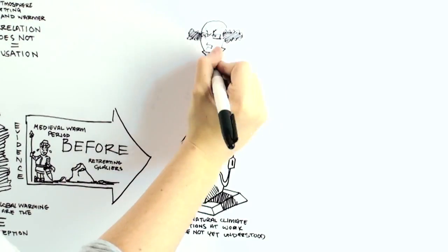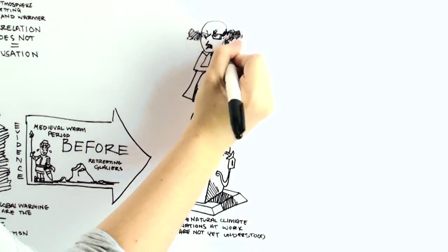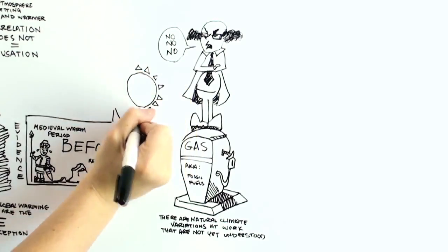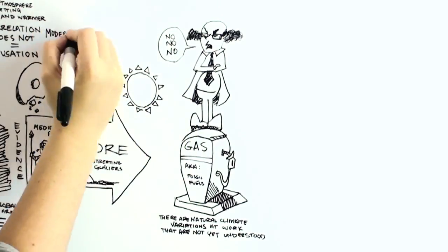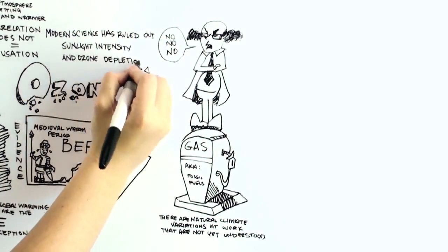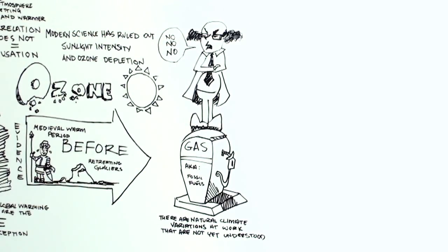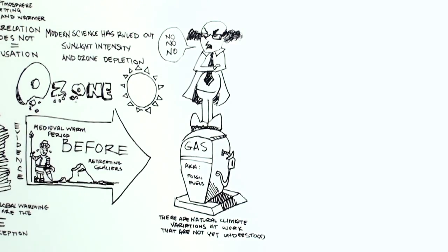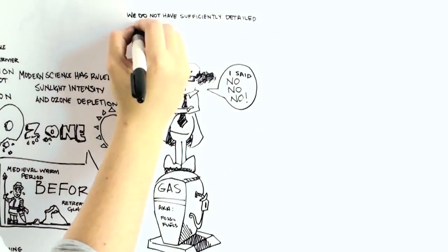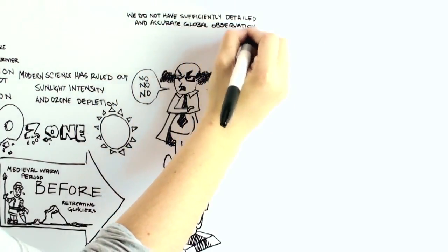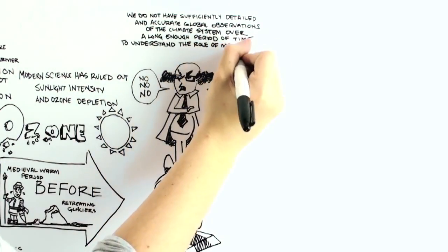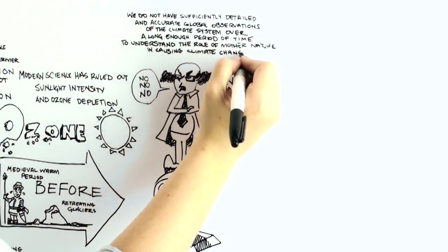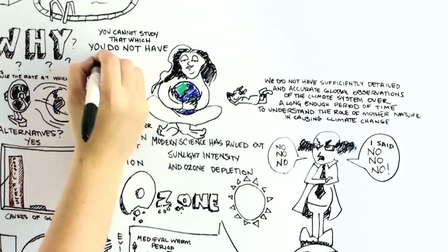While it is true that modern science has ruled out the most obvious direct influences on the climate system, like changes in sunlight intensity or ozone depletion, scientists have essentially ignored natural indirect sources of climate change generated by the climate system itself. The reason why is that we have not sufficiently detailed and accurate global observations of the climate system over a long enough period of time to understand the role of Mother Nature in causing climate change. You cannot study that which you do not have the data to study.